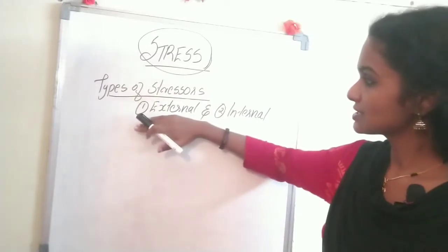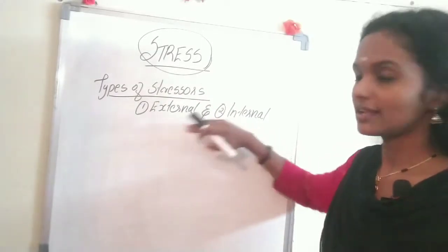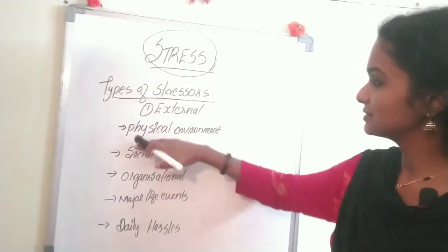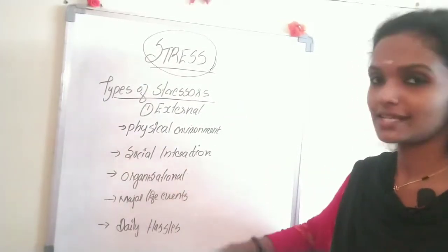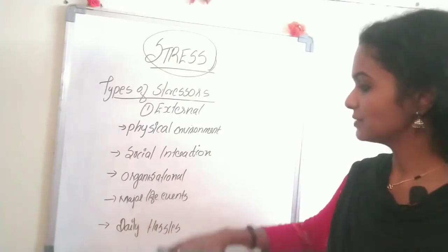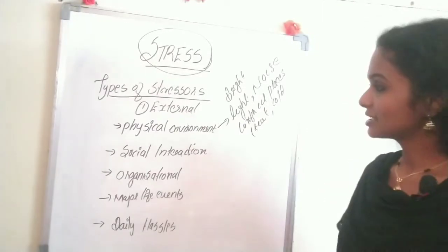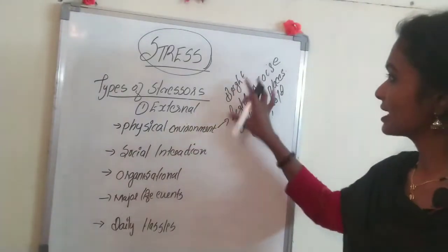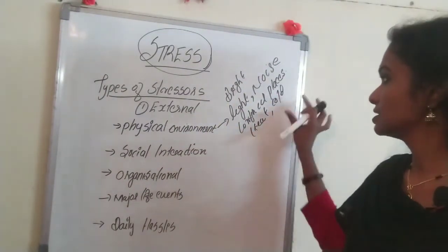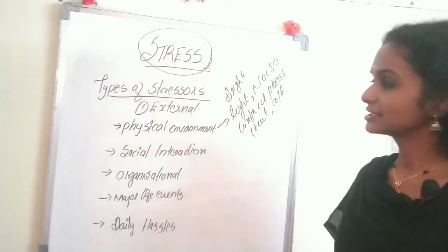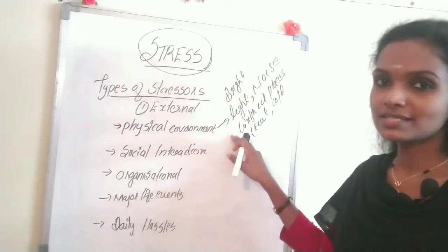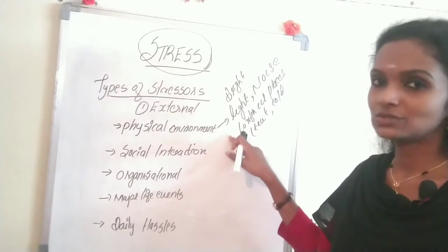External factors include physical environment, social interaction, organizational factors, major life events, and daily hassles. Examples for physical environment are bright light, noise, confined places, excessive heat, and cold. These are things that can cause stress for an individual person.